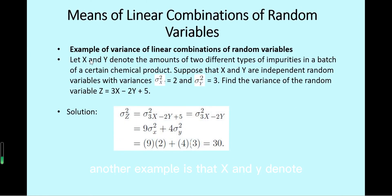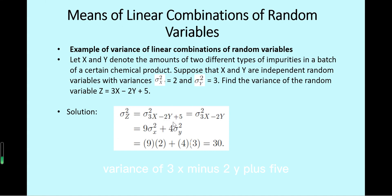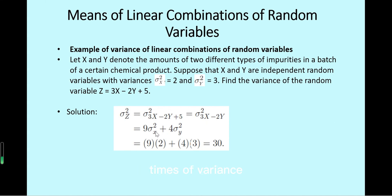Another example: x and y denote amounts of two types of impurities in a batch of a chemical product. x and y are independent with Var(x) = 2 and Var(y) = 3. Find Var(z) where z = 3x minus 2y plus 5. Since x and y are independent, Var(3x minus 2y) = 9·Var(x) + 4·Var(y) = 18 + 12 = 30.